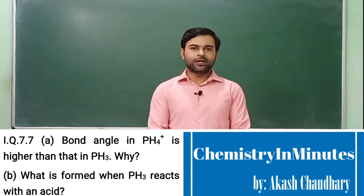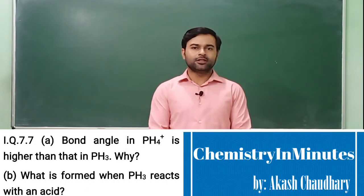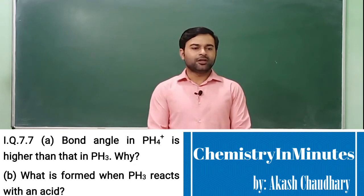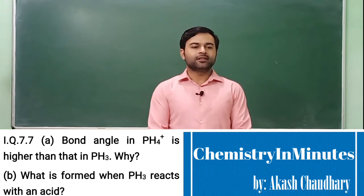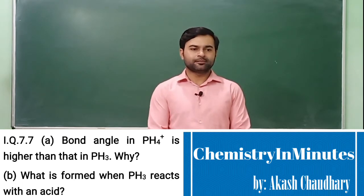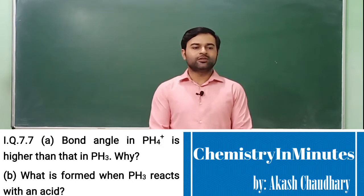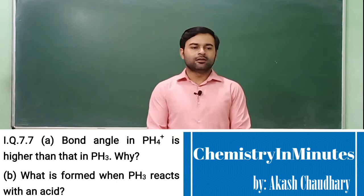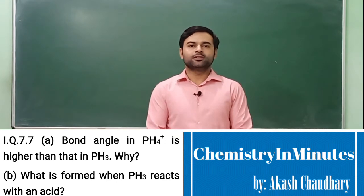Hello my dear friends. Welcome to Chemistry Minutes. The question now appearing on your screen is in-text question 7.7. The question is: part (a) bond angle in PH₄⁺ is higher than that in PH₃ — why? And part (b) what is formed when PH₃ reacts with an acid?